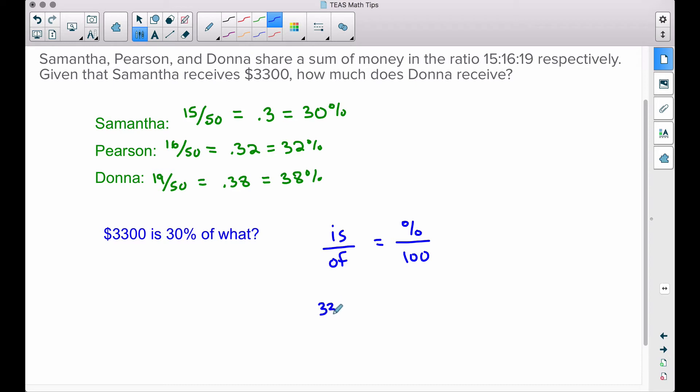So now we have this common proportion that maybe you have heard of before: is over of equals percent over 100. $3,300 is, that's going to be our numerator. Of what? No idea, so I'm going to put a variable in the of spot. And then we know we have 30 percent. I'm going to put that 30 over 100.